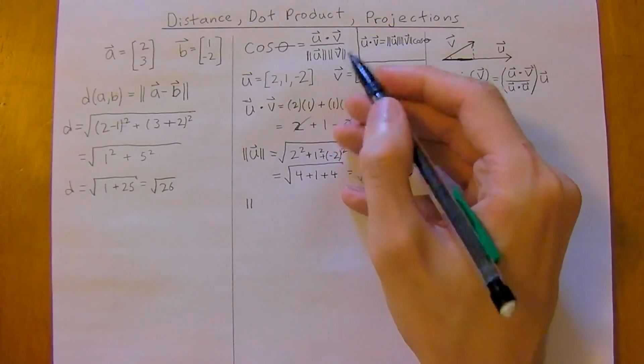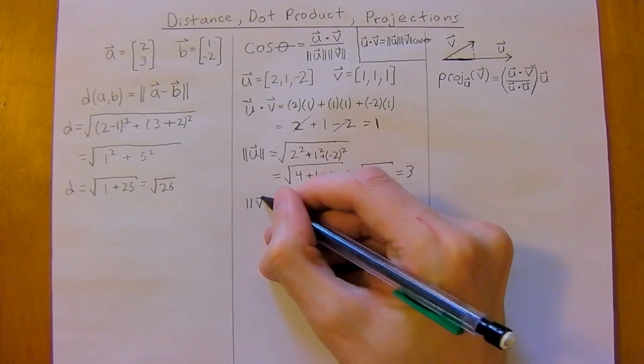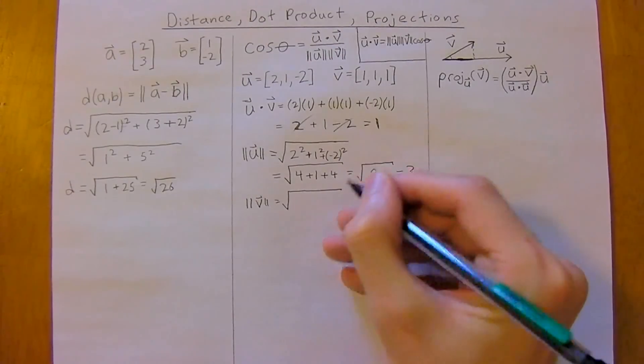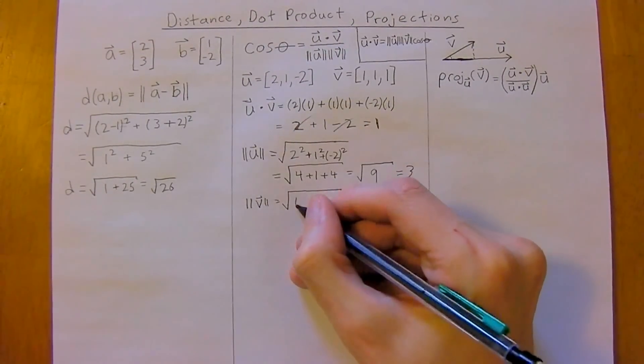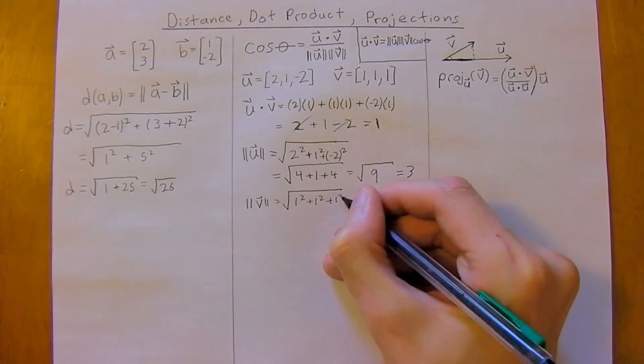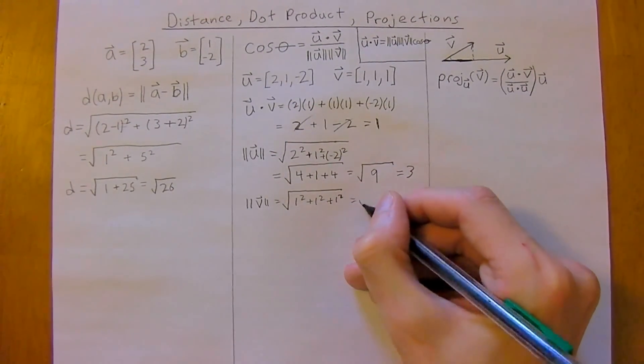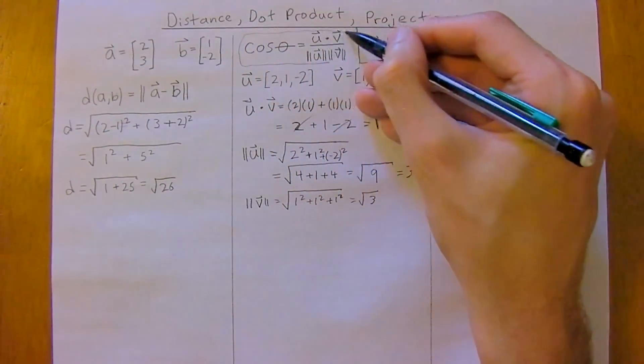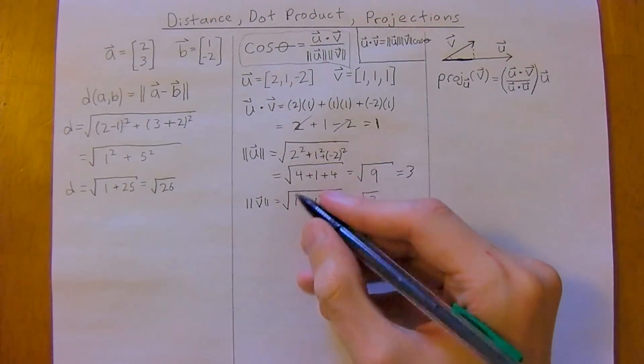Now we need the magnitude of V, so V is equal to Pythagoras theorem again, so 1 squared, this should be easy, plus 1 squared plus 1 squared, which equals the square root of 3. So now we can go back to this equation up here, start filling it in.